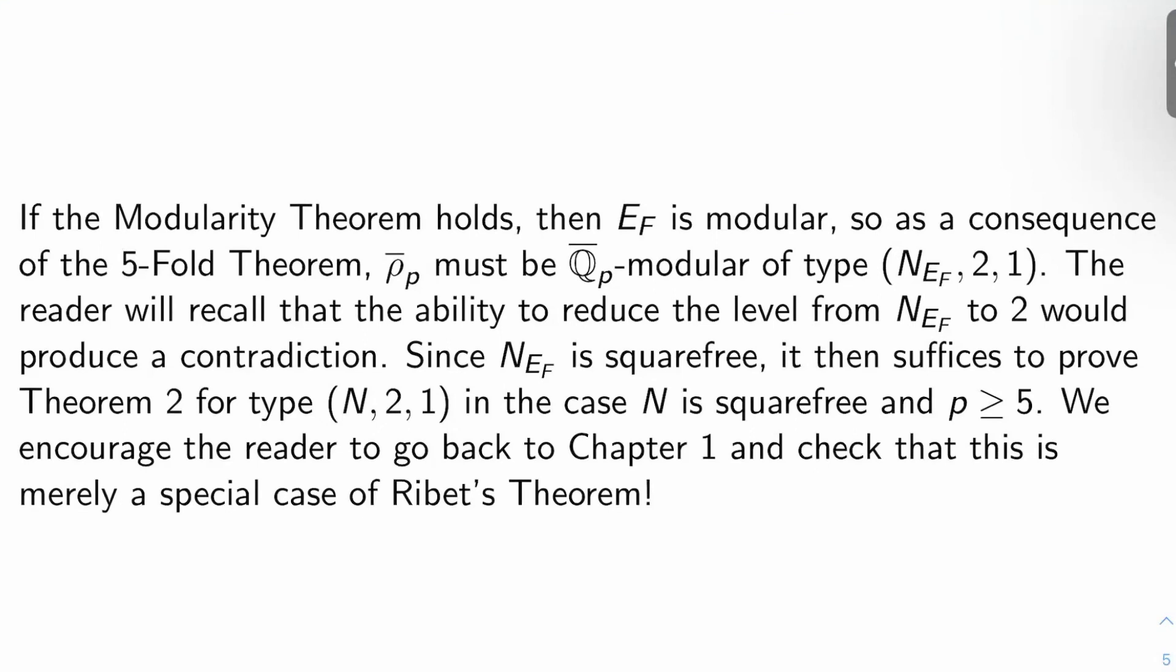N_{E_F} is squarefree since E_F is semi-stable by definition of conductor, and so it suffices to prove theorem two for type (N, 2, 1) in the case N is squarefree and p is at least five. If you go back to chapter one and look at the statement of Ribet's theorem, this is just a special case of Ribet's theorem.